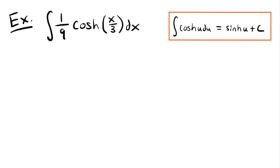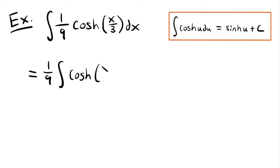The moment you see that there's another function other than just x within a hyperbolic function, you are most likely going to want to set that inside function equal to u and use u-substitution. So the first thing I'm going to do is pull out the constant multiple to the outside of the integral. That gives us 1/9 times the integral of hyperbolic cosine of x divided by 3, times dx.